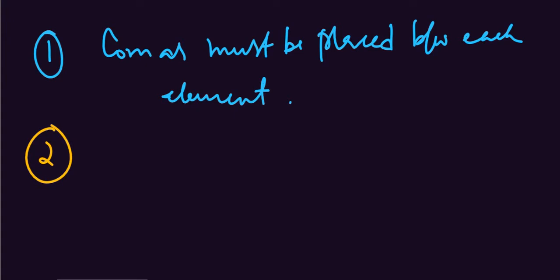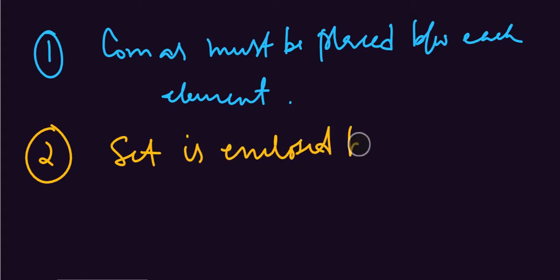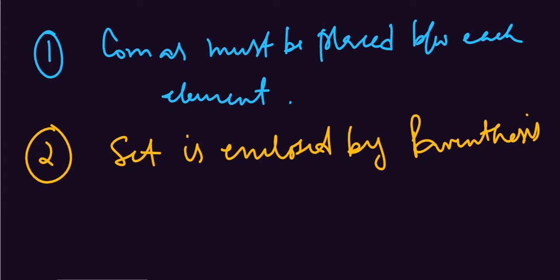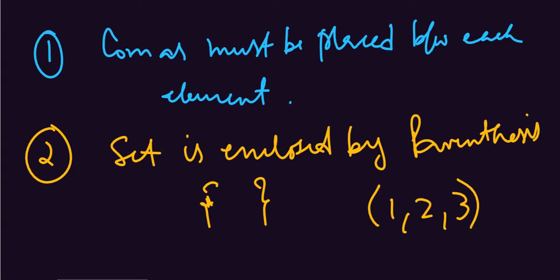The second point is: a set is enclosed by parenthesis. You know there are 3 types of parenthesis — large brackets, small brackets, and curly brackets. For a set, the fundamental bracket is the curly bracket. Only this bracket can be used. So if I say is this a set without curly brackets, you say no — this is not a set. But when curly brackets are used with 1, 2, 3, yes, this is a set because everything is correct.